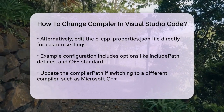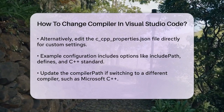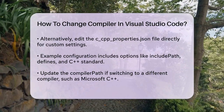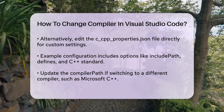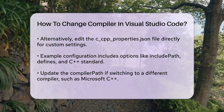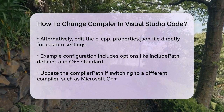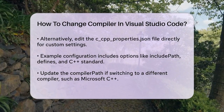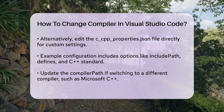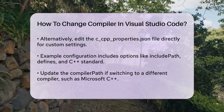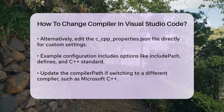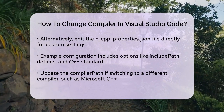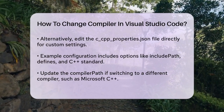If you're switching to a different compiler, such as the Microsoft C++ compiler, you'll need to update the compiler path accordingly. For instance, it might look something like C:/Program Files (x86)/Microsoft Visual Studio/2019/BuildTools/VC/Tools/MSVC/14.28.28314/bin/HostX64/cl.exe for Microsoft Visual C++.